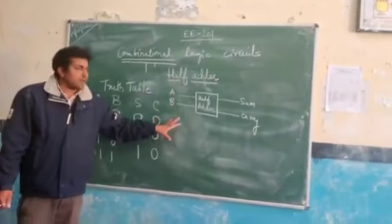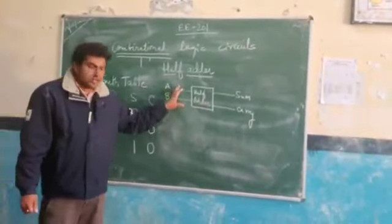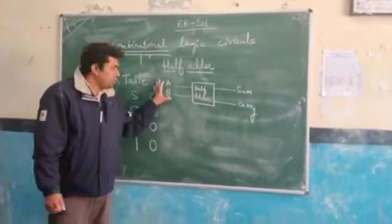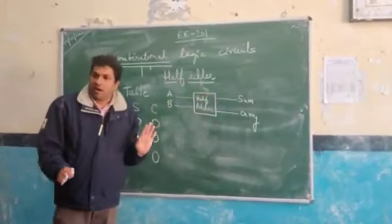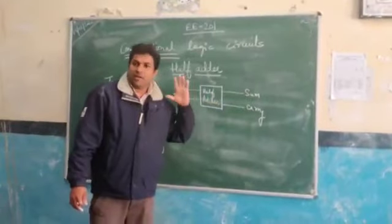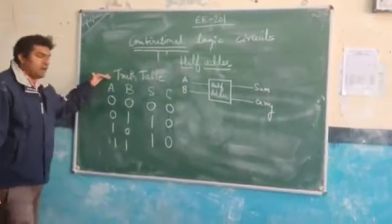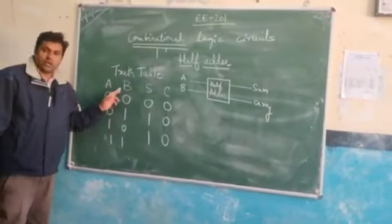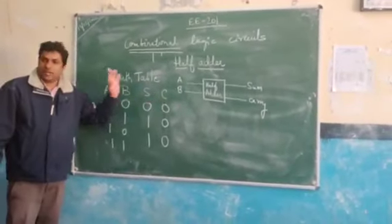Now we were studying half-adder, which I have already told you about. It has two inputs and two outputs. The outputs will be sum and carry. Now we are looking at the truth table. We have two inputs, one sum output and one carry output.